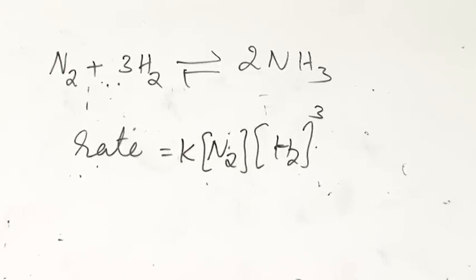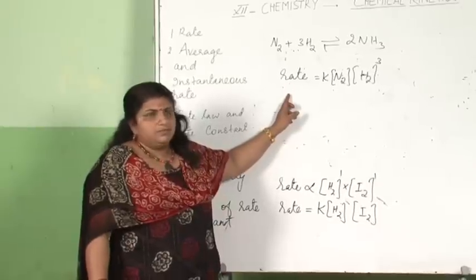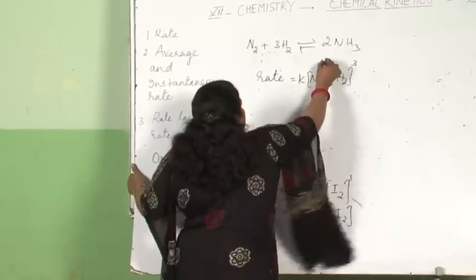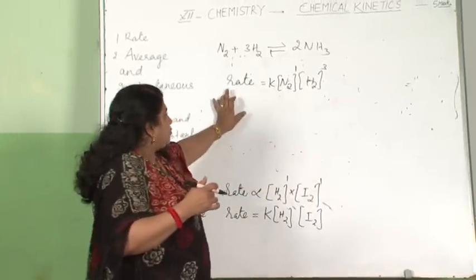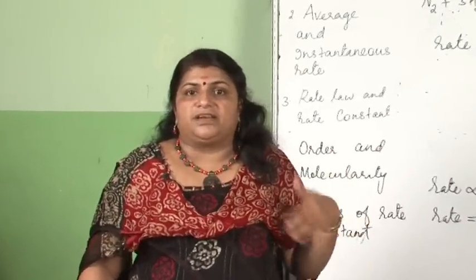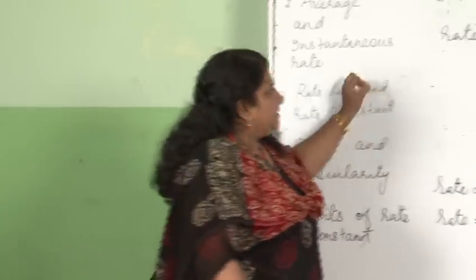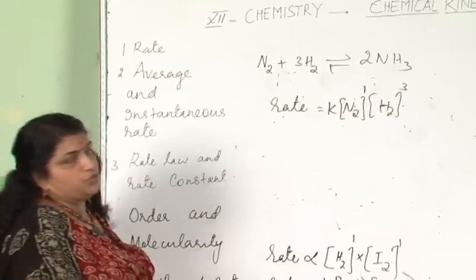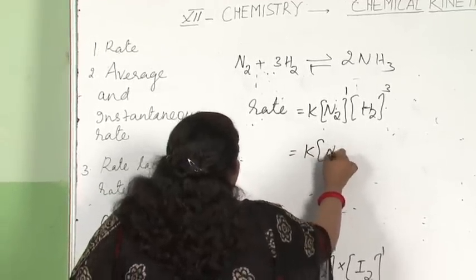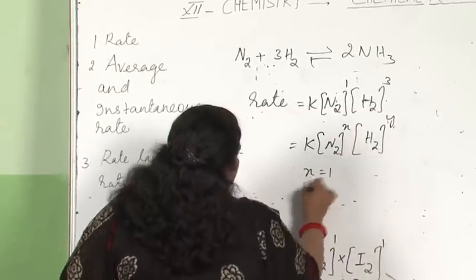When we write the rate expression, we need to discuss order and molecularity. In kinetics, it is not necessary that the powers in the rate expression match the stoichiometric coefficients. Generally, we write rate = k[N₂]ˣ[H₂]ʸ, where X may or may not equal 1, and the values of X and Y are determined experimentally.